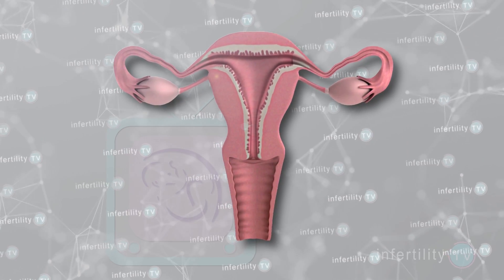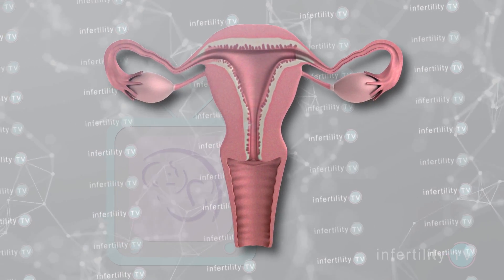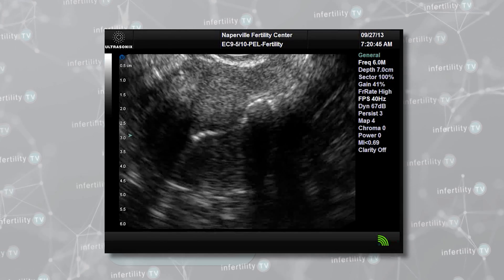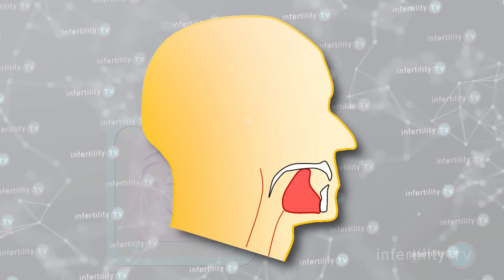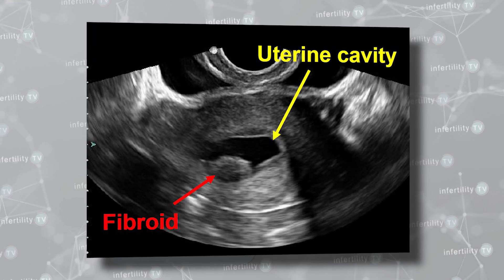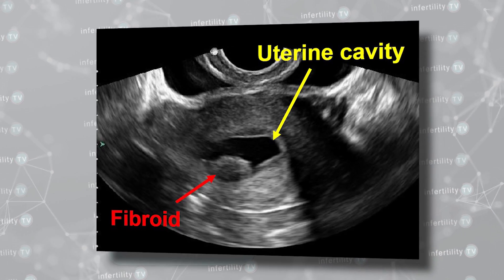In order to get an optimal evaluation of the uterine cavity, it should be opened up with fluid first. Remember, the uterine cavity isn't a big open space like a cave — the walls of the uterine cavity are pressed up against each other. Think of your tongue pressed up against the roof of your mouth. Separating the walls of the uterus will increase the ability to identify problems that could lower your IVF success rate.